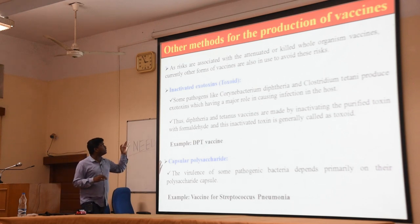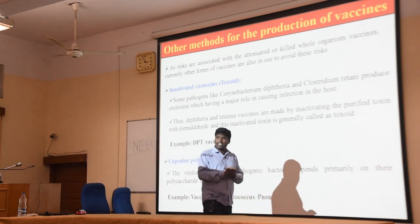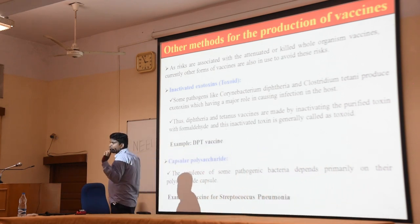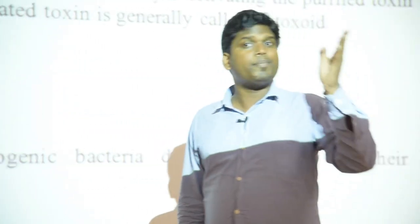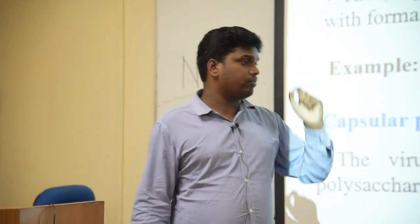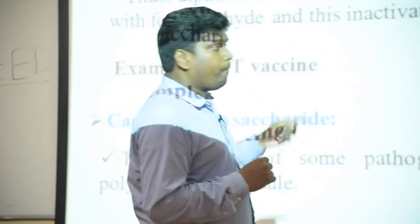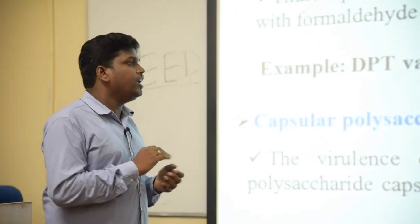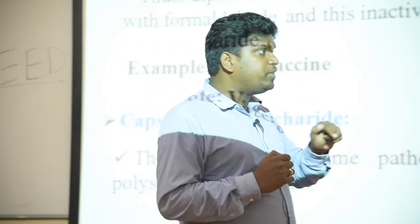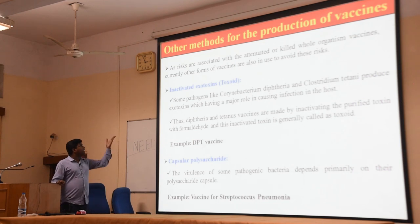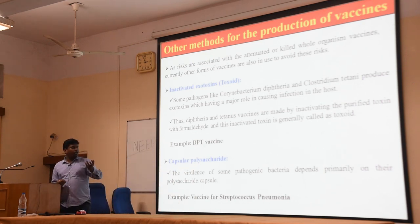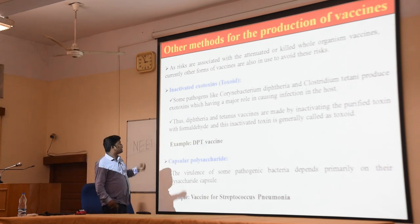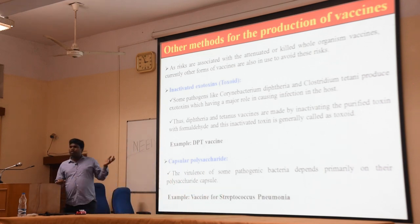There are several risks associated with both inactivated/killed vaccines and live attenuated vaccines, because we are using the whole organism. In the case of live attenuated vaccine, the pathogen can revert back to its normal virulent form, causing disease in the vaccinated individual. There are also demerits of inactivated or killed vaccines. Because of these concerns with whole-organism vaccines, other types such as inactivated exotoxins and capsular polysaccharide vaccines came into the light.